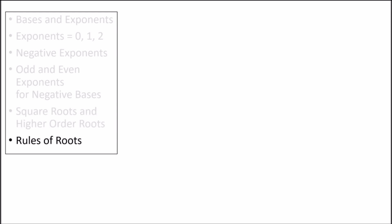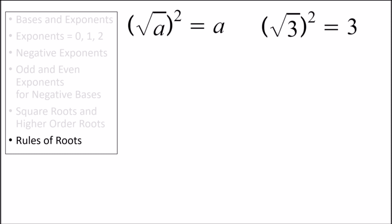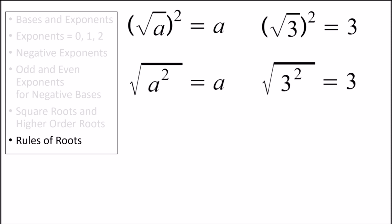Next we have four main rules of roots that we might run into on test day. The first rule is that the square of the square root of a positive number is that number itself. So for example, the square of the square root of 3 is 3. The next rule is that the square root of the square of a number is that number itself — so the square root of the square of 3 is also 3. These first two rules are inverse operations of each other, meaning they cancel each other out. So whenever we see the exponent 2 and a square root together, we can ignore both of those operations.